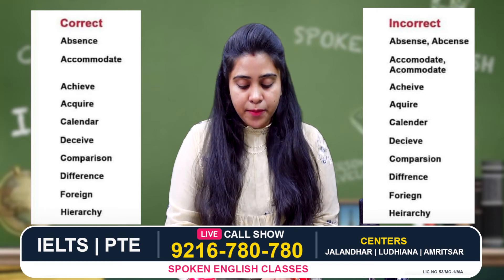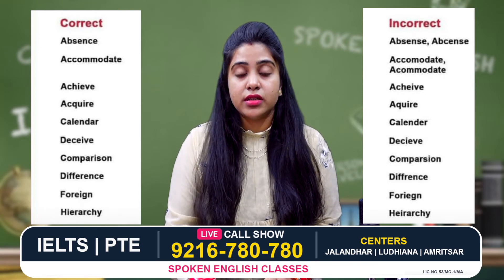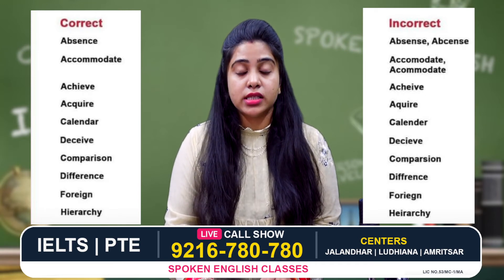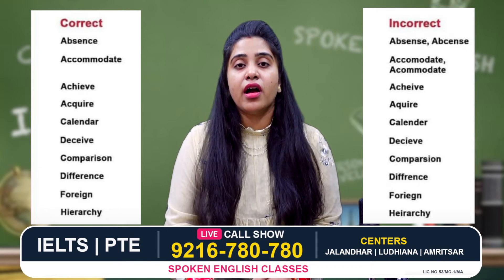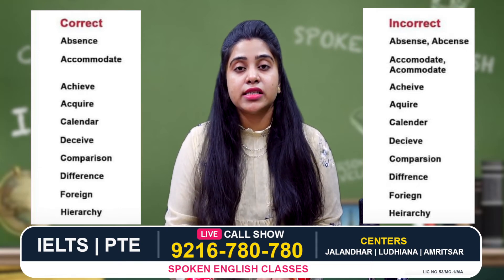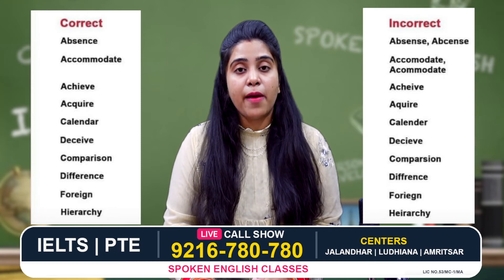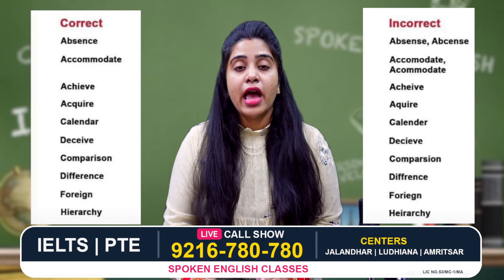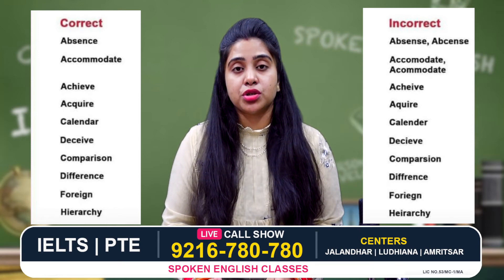The next word is 'comparison'. The right spelling of comparison is c, o, m, p, a, r, i, s, o, n. But students use c, o, double m, p, e, r, s, i, o, n. The next word is 'competition'.